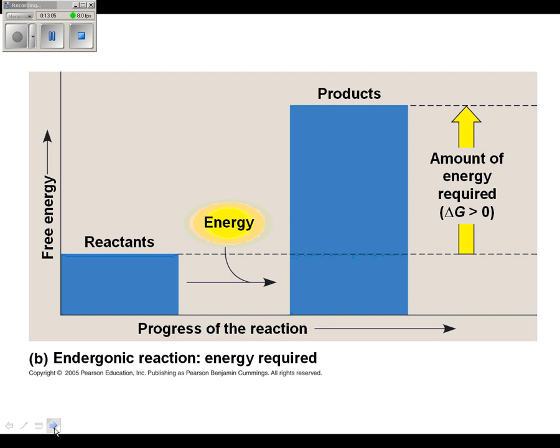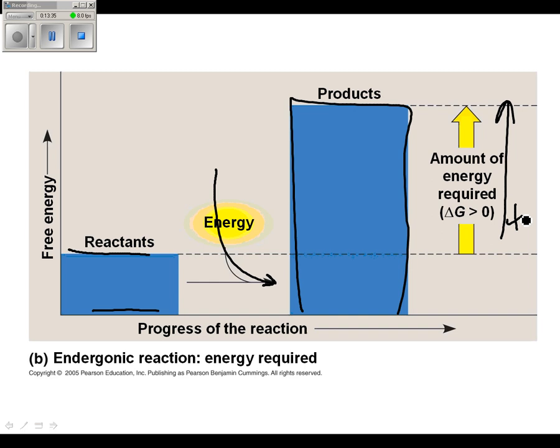In a reaction called an endergonic reaction, the reactants on this side, you need energy put in to make the products. We have to put energy in to make the products. Building muscle is an endergonic reaction. We have to take the things we've eaten and put them together to make products. That requires energy. Delta G has to be positive. The change in free energy is positive. I hope you're still with me. If not, we'll go over this.